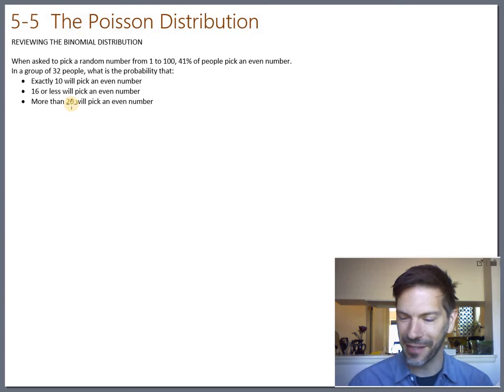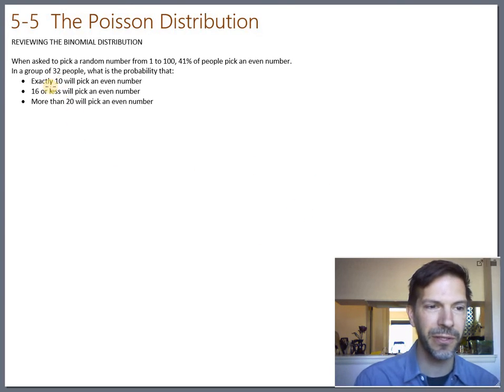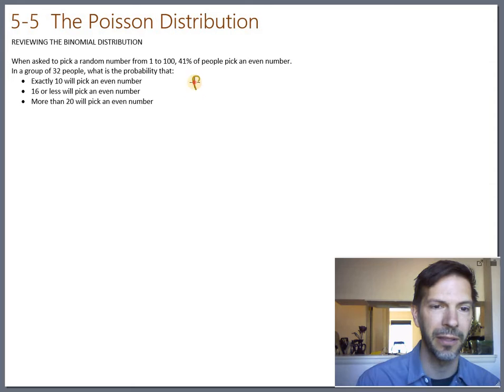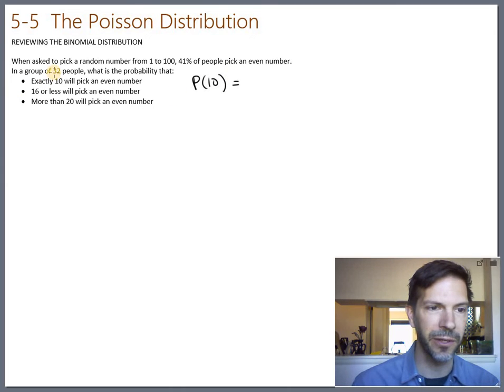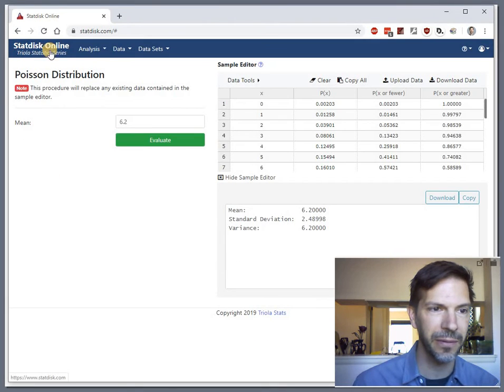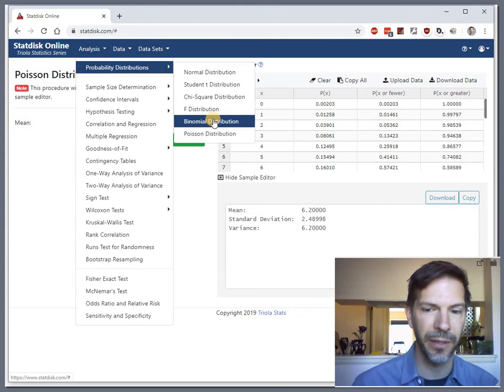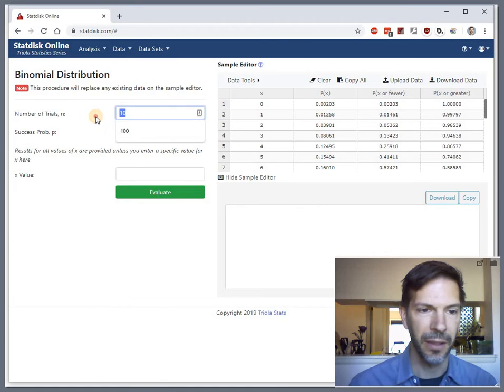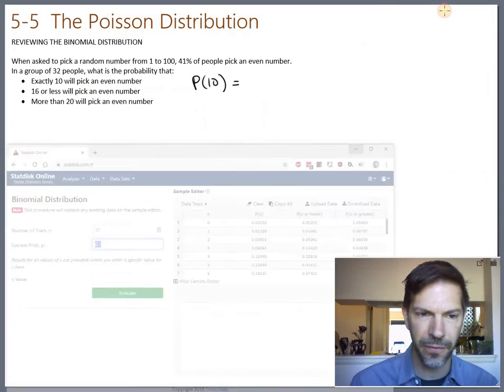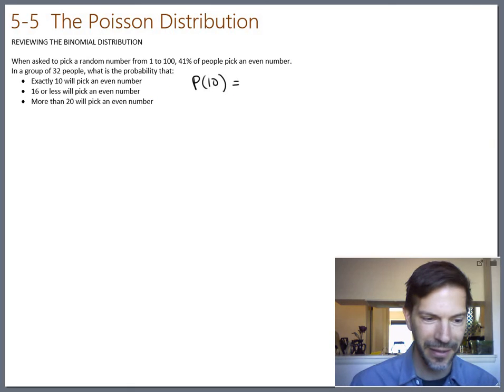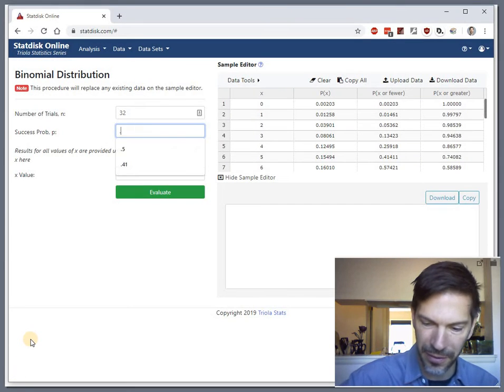Okay, welcome back. Let's see how you did. The first question is exactly 10. So we want the probability of 10 exactly. We've got 32 trials, 41% chance of success. When we pull up StatDisk, we go to probability distributions under analysis, and then to binomial. We'll say 32 trials, and 41% is the probability of success.